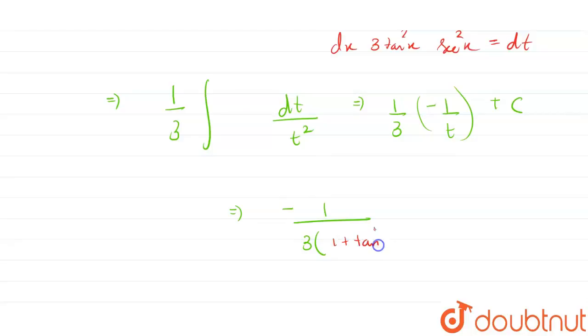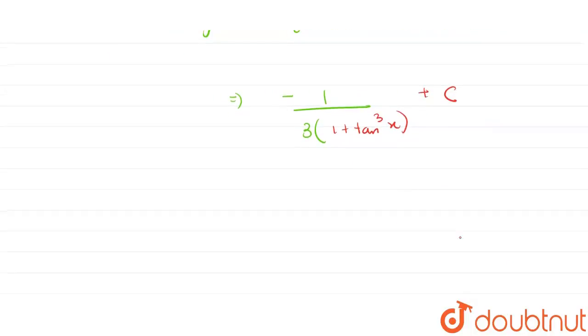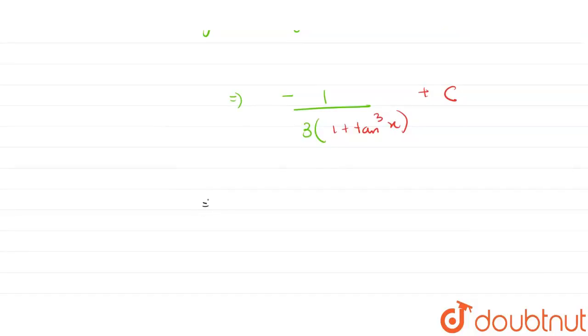1 + tan³x plus C. So the final answer becomes minus 1 by 3 times (1 + tan³x) plus C.